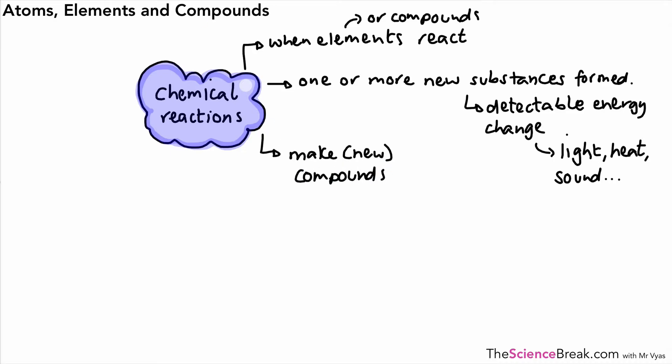We make compounds. This is an important keyword, and we need to know exactly what that means. A compound is when we have two or more elements chemically combined in fixed proportions. Those three lines are all important for that definition.